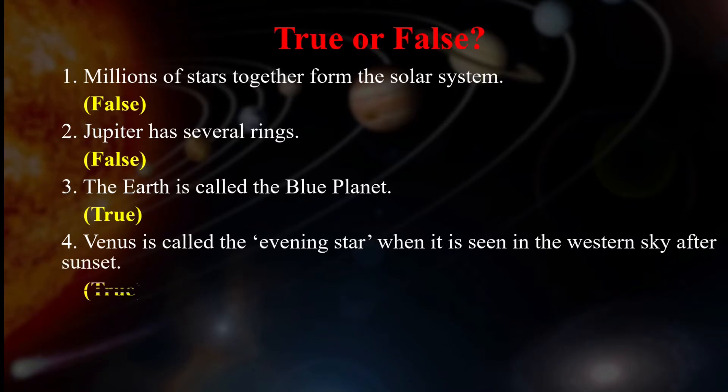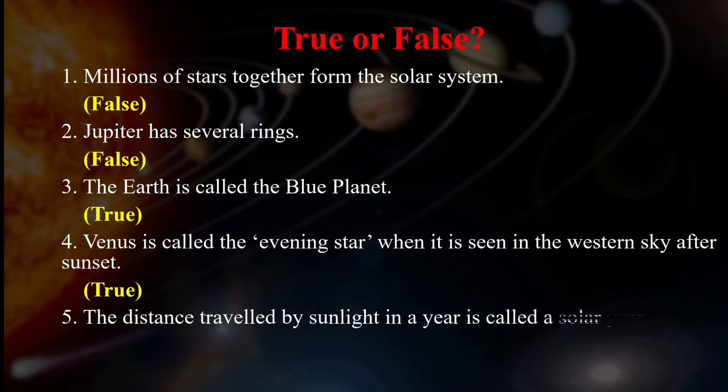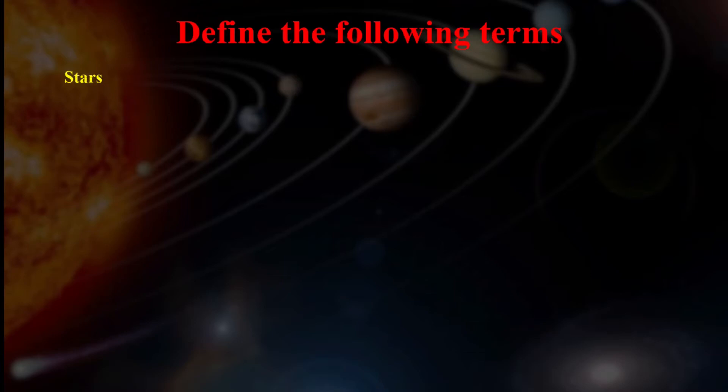Next, Venus is called the evening star when it is seen in the western sky after sunset. This is true. Venus is called morning star when it appears in the east before sunrise. Also, it is known as evening star when it is seen in the western sky after sunset. Next, the distance traveled by sunlight in a year is called a solar year. No, false. The distance traveled by light in a year is called a light year.